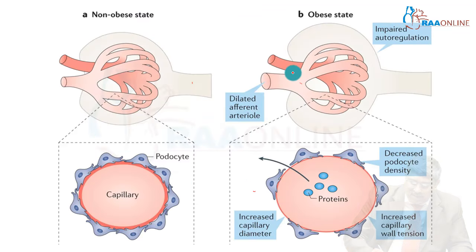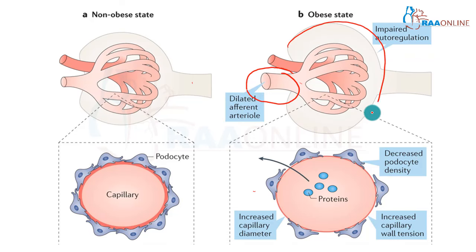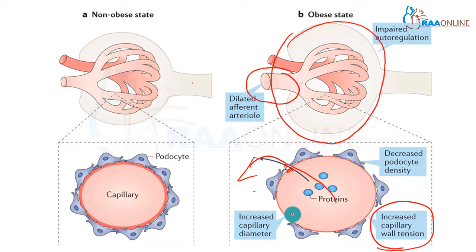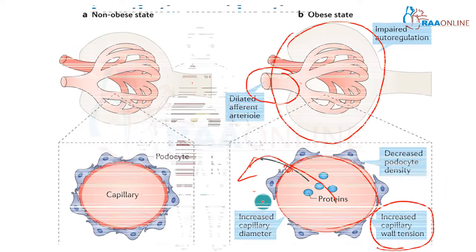Protein leakage can happen, which can affect your drug protein binding. You can see the dilated efferent arteriole and impaired autoregulation due to enlargement of the glomerulus. The podocytes give way, protein leaks into the interstitium, and there is increased capillary wall tension; capillary diameter is increased compared to normal.